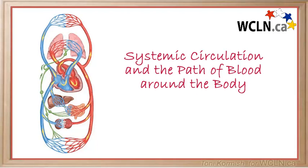Now that you have a good understanding of the pulmonary circuit, we're going to take a look at how the pulmonary circuit and systemic circuit work together to transport oxygenated blood to the tissues of the body and carry deoxygenated blood away.